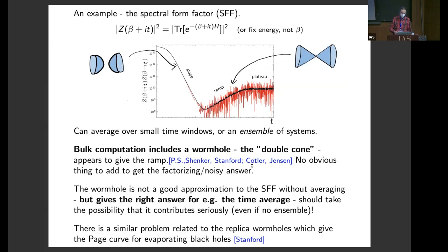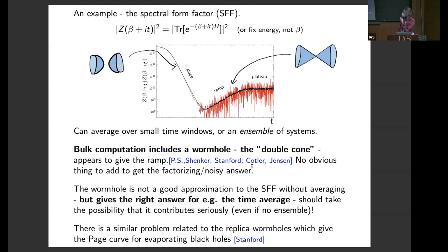So in this talk, we're mostly going to be keeping in mind a specific simple example, which is the spectral form factor. The partition function Z(beta), continuing beta to beta plus it, where t is real time.